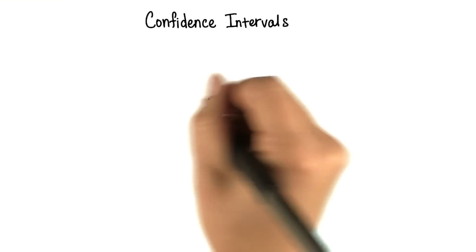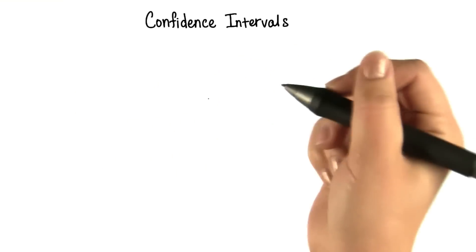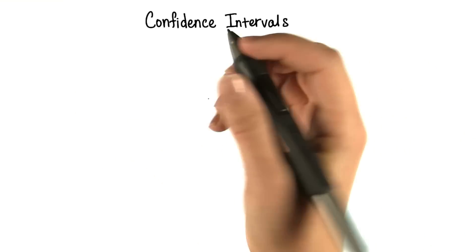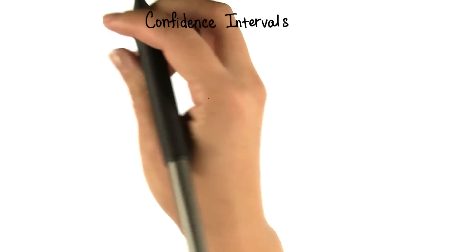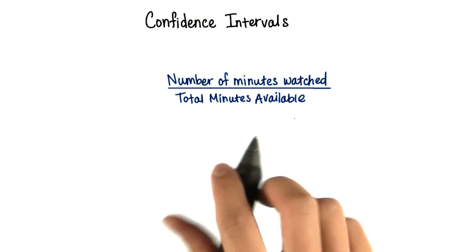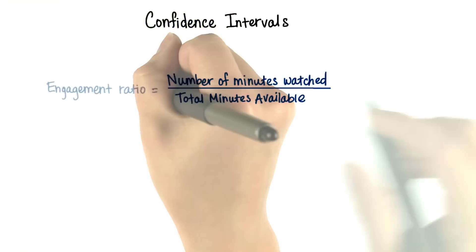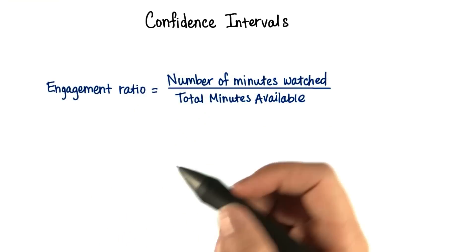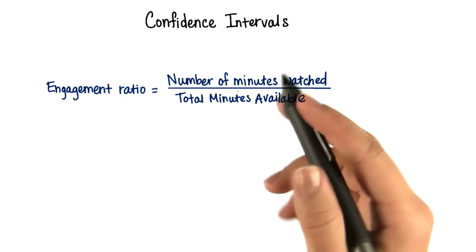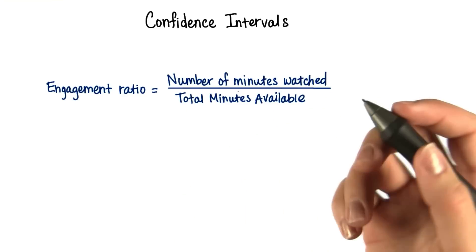Maybe one way is to look at the number of minutes that each person has watched of the videos, divided by the total minutes that are available. We could call this something like the engagement ratio, because this provides some indication of how engaged you are. If you're watching more video, then you're probably more engaged.